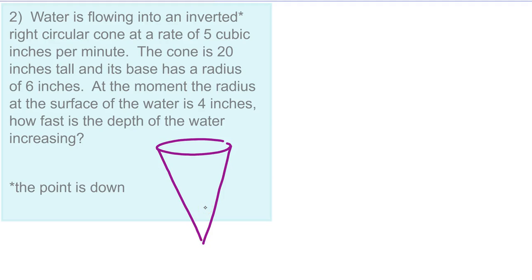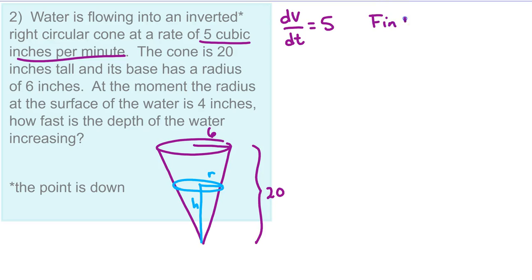So I'm going to draw my sketch, and let's see, the cone is 20 inches tall. The radius is 6, but when it's only partly full of water, we'll call the radius r and the height h. And what else do we know? The volume, the rate of change of the volume is 5 cubic inches per minute, and the volume is increasing so that's going to be a positive rate. We want to know the rate of change of the depth of the water. So dh dt at the moment when r is 4.